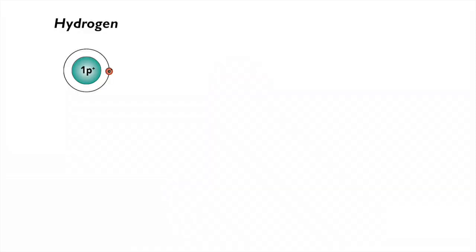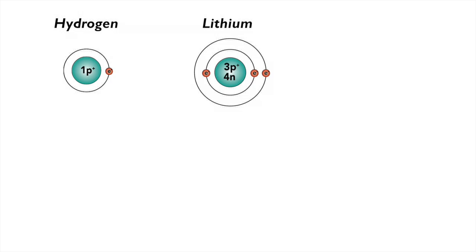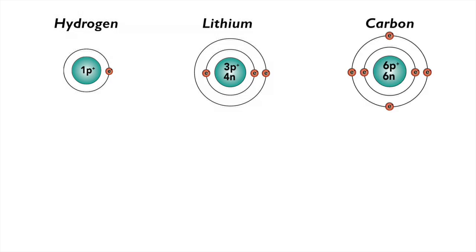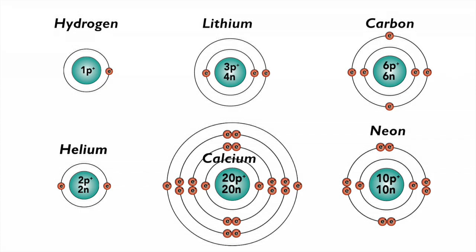What I'm going to do now is show you a series of atoms, and I want you to mentally label them as either happy or unhappy. Hydrogen, lithium, carbon, helium, calcium, and neon. Pause the video, mentally label them, and hit play when you're ready to see the explanation.